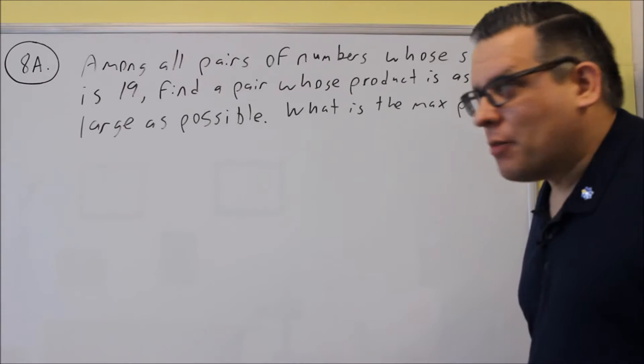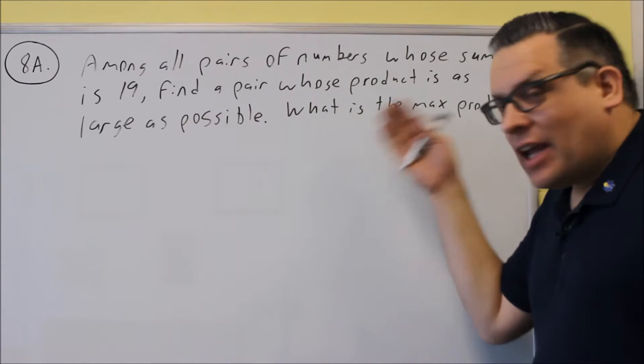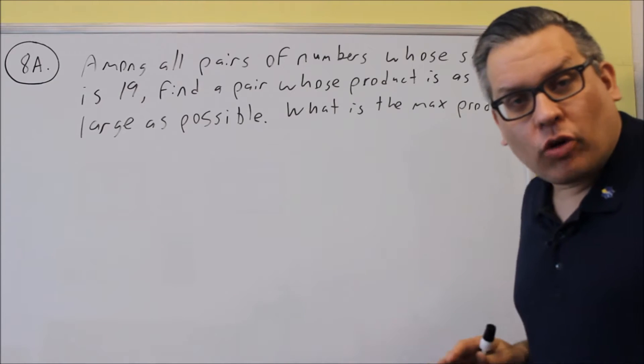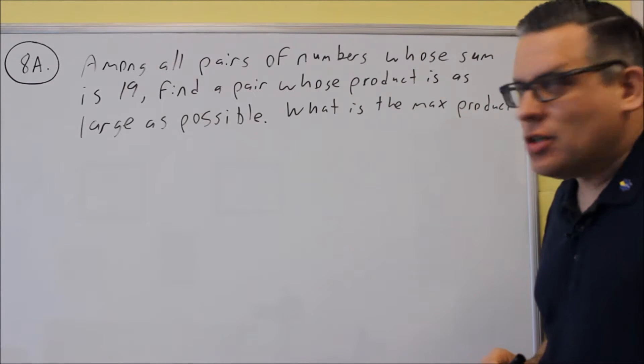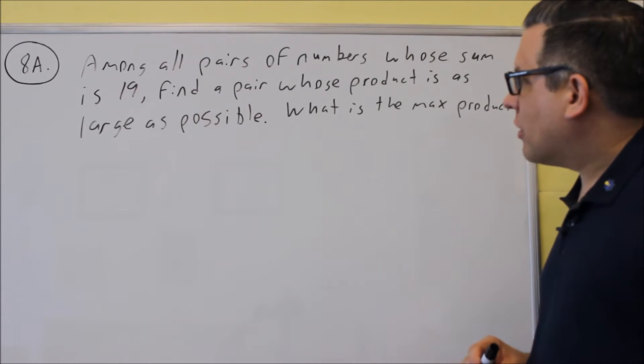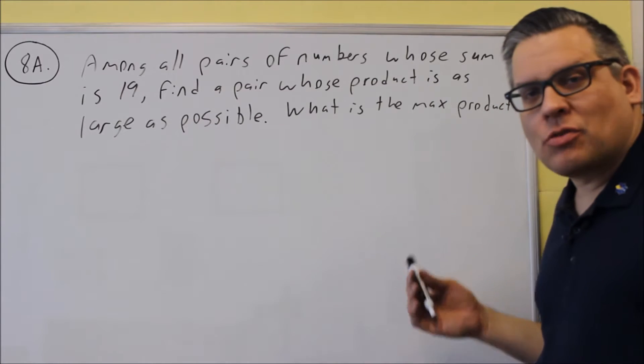Okay, now we're starting to get into some word problems here. So 8 and 9 are going to deal with word problems. So 8a, among all pairs of numbers whose sum is 19, find a pair whose product is as large as possible. What is the maximum product?